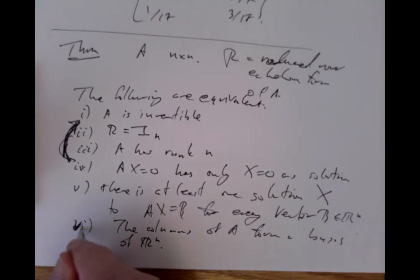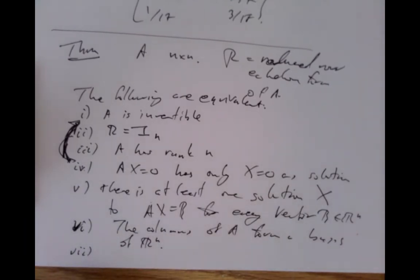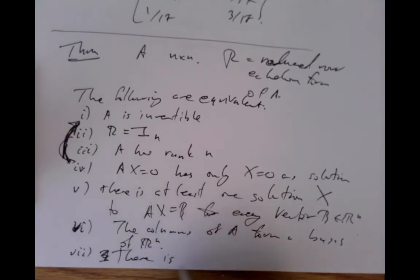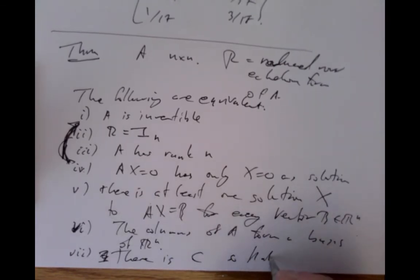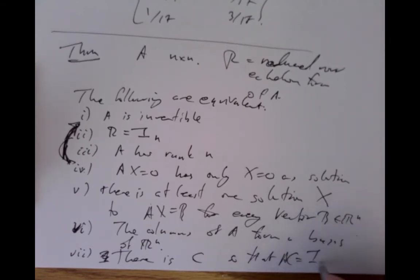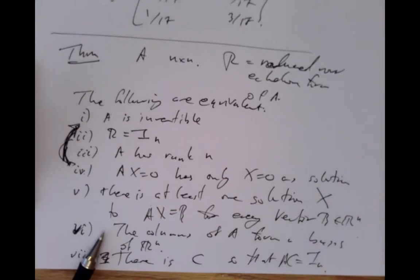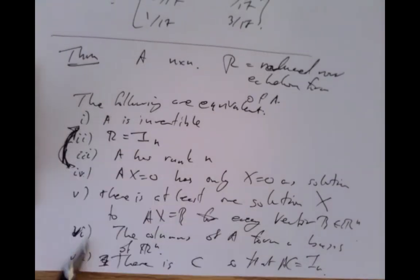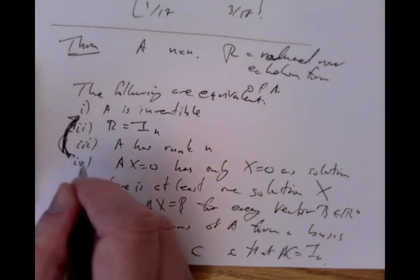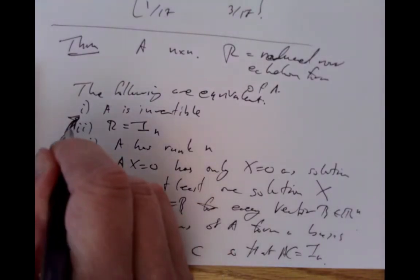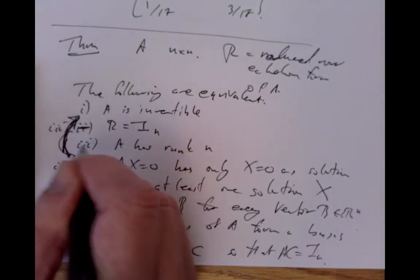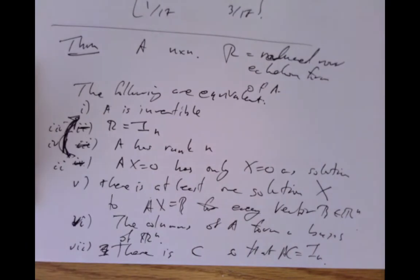And sixth: there exists a matrix C such that CA equals the n×n identity matrix. When I say the following are equivalent, I mean if one of these statements is true then all are true, and if one is false then all are false. They're either all true or all false for any particular matrix.